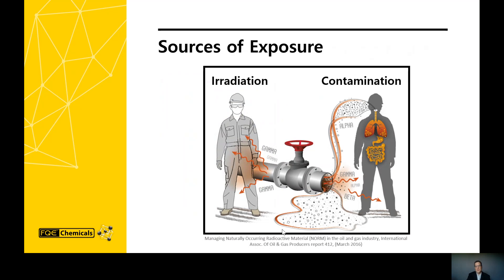There are two ways in which a person can be exposed to NORM: irradiation, which is the external exposure where the source remains outside the body, and contamination, which is internal exposure through absorption, inhalation, or ingestion.